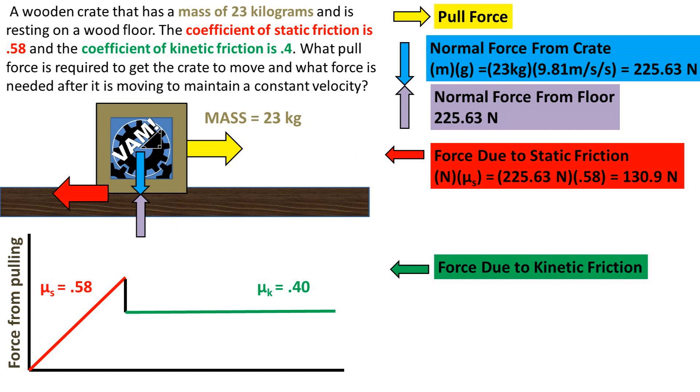Now to get the force needed to overcome static friction, we can take the normal force times the coefficient of static friction to get 130.9 newtons of force for the max static friction. So if the pull force is less than or equal to the static friction, the object will not move. If the pull force is greater than the static friction force, then the object will begin to move.